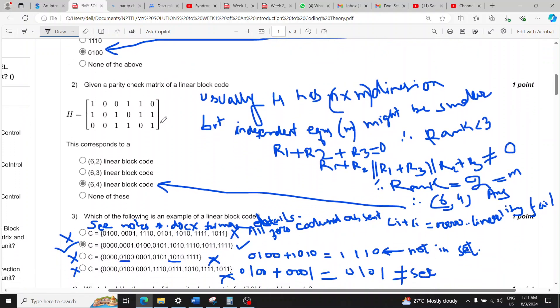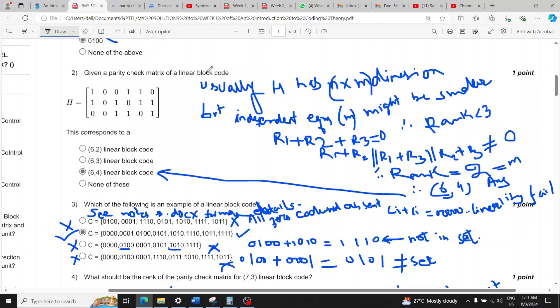Then a parity check matrix is given for a linear block code, and the answer is this because usually the dimension is n cross m, where m is the number of parity check equations which are shown three here, but when you add them up the rank is not three.